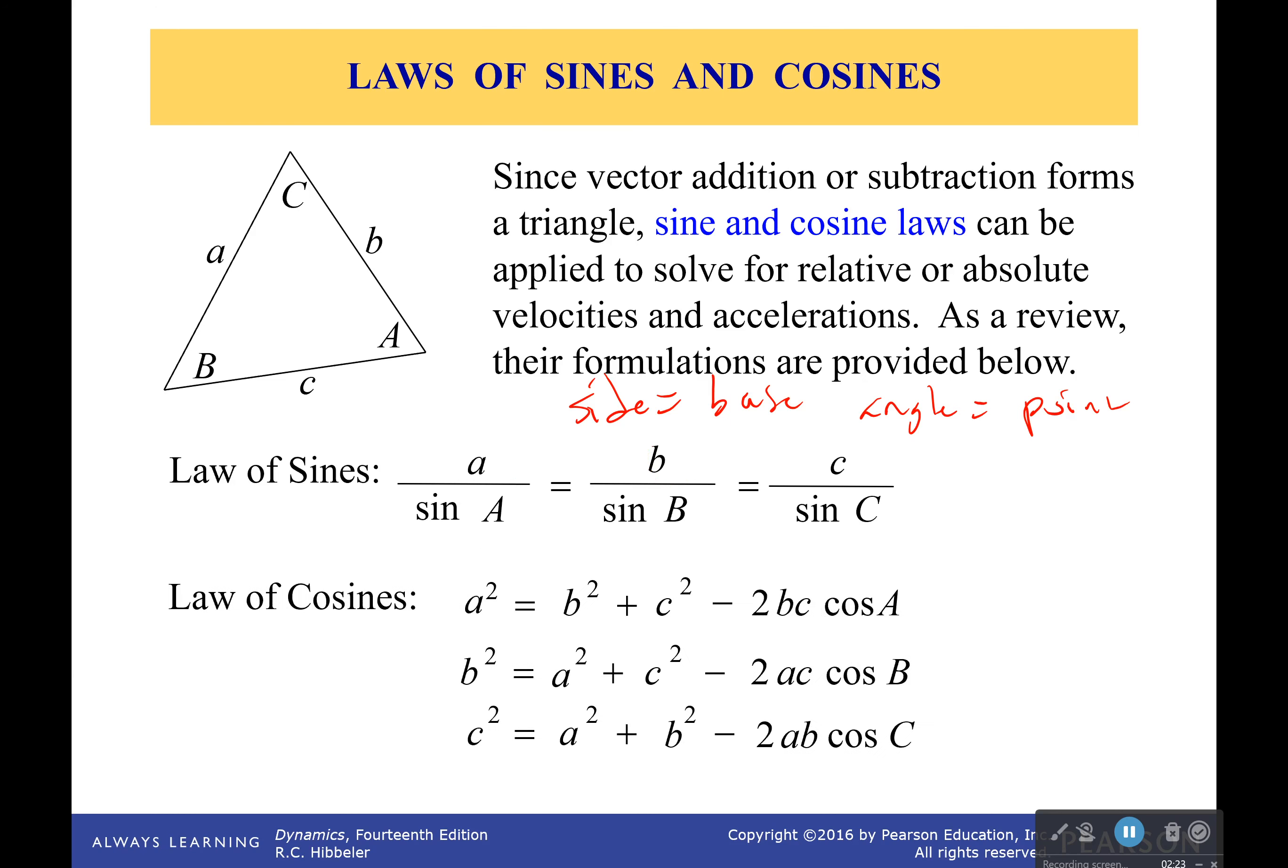Now law of cosines is a little bit different. If I just hide this right here, you might realize that this looks an awful lot like the Pythagorean theorem, and you're correct. It's very similar to Pythagorean theorem; it's just we have a correction term right here to take into account we've messed up a little bit. It's not just a² = b² + c², no, we've got this correction term right here.